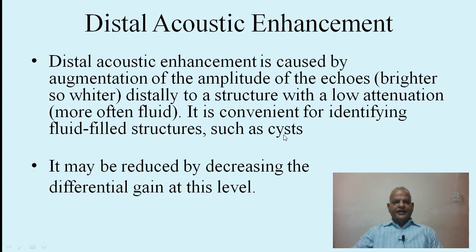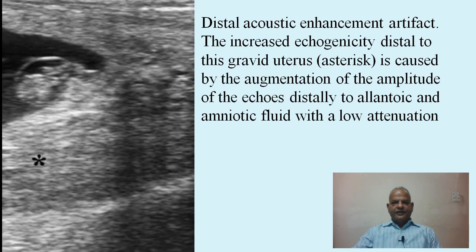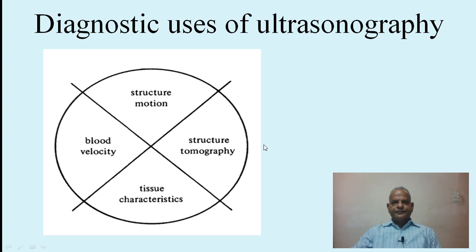Distal acoustic enhancement is caused by augmentation of the amplitude of echoes distal to a structure with low attenuation. It is convenient for identifying fluid-filled structures such as cysts, and may be reduced by decreasing the differential gain at that level. The artifact shown here demonstrates increased echogenicity distal to the gravid uterus, caused by augmentation of the amplitude of echoes distal to allantoic and amniotic fluid with low attenuation.